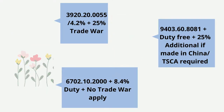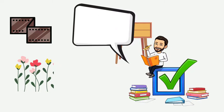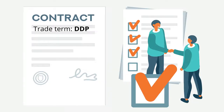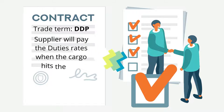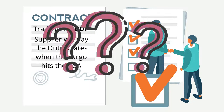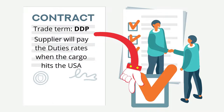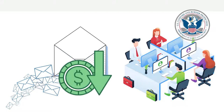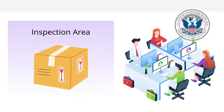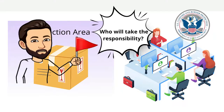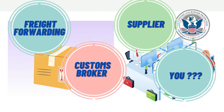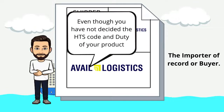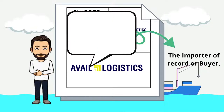Was your product affected by the additional trade duty? It is important to know the accurate HTS code and duty of your product because it helps you avoid any problem with US Customs later on. Let's say you don't care about the HTS code and duty rate because you buy goods from a supplier under DDP terms, which means your supplier will pay the duties rates when the cargo hits the USA. In some cases, the supplier will use the wrong HTS code or lower the invoice value on purpose. If US Customs holds the shipment for review and reveals the improper code usage, who takes responsibility — your supplier, freight forwarder, customs broker, or you? The answer is the importer of record or buyer. Even though you have not decided the HTS code and duty of your product, you will be in charge in front of CBP if something goes wrong.